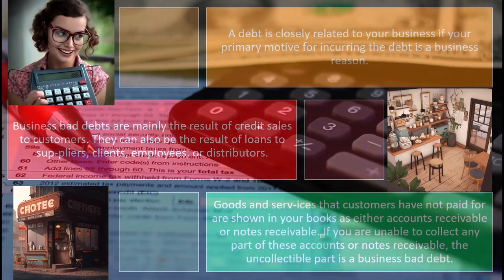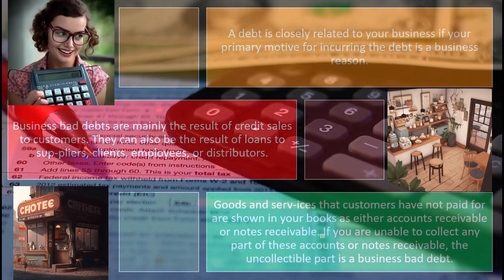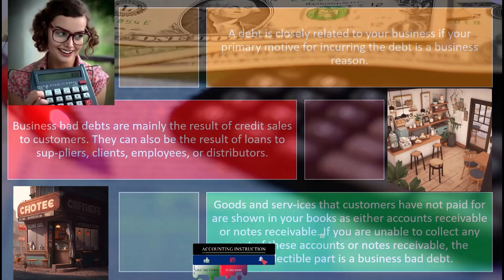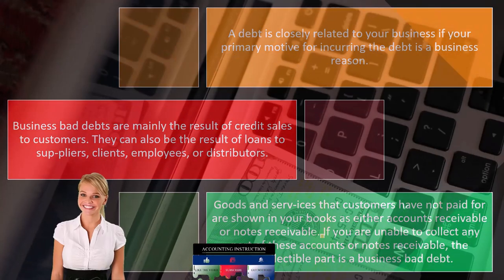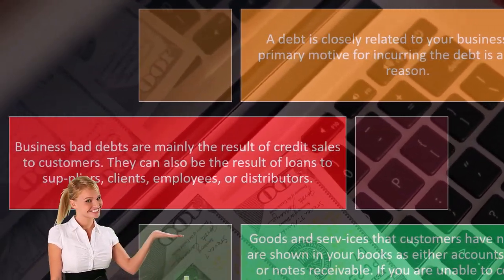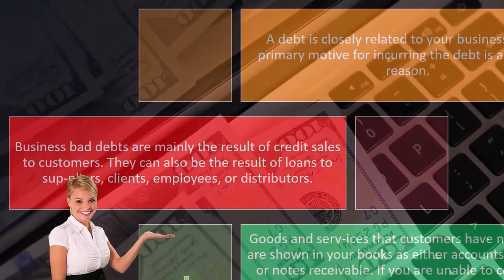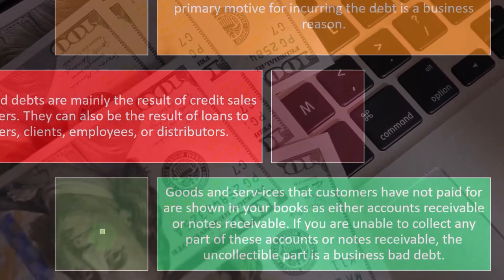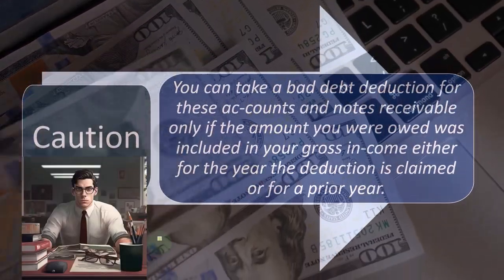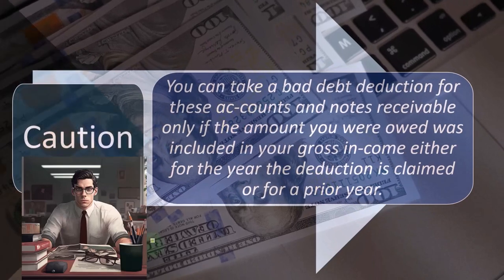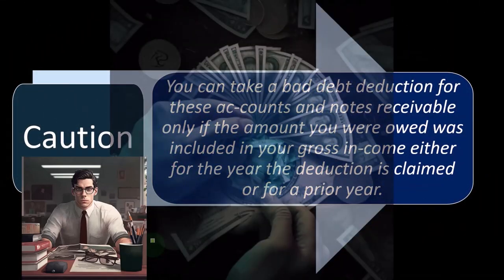If you're doing that, you're going to be on an accrual basis. You've recorded the revenue when you did the work, but you hadn't yet received the money. The question is, what if they don't pay you in the future? You recorded revenue already, and you have to account for the fact that you recorded revenue in the past, which might become an expense in the future. So if you are unable to collect any part of these accounts or notes receivable, the uncollectible part is a business bad debt.